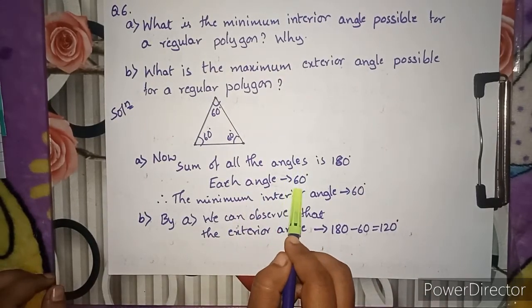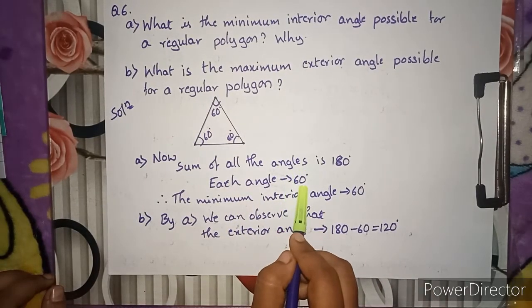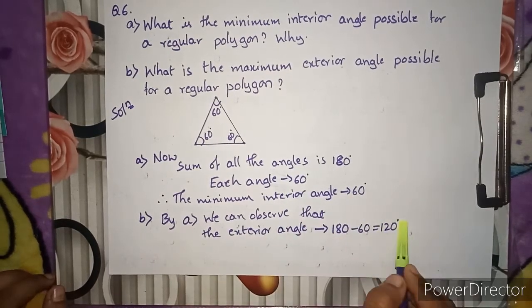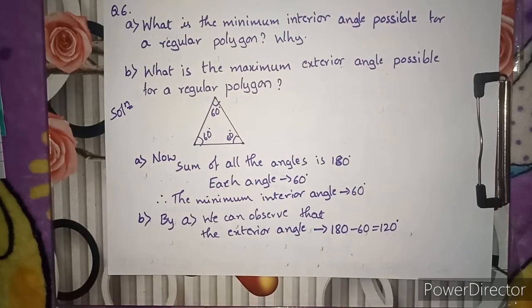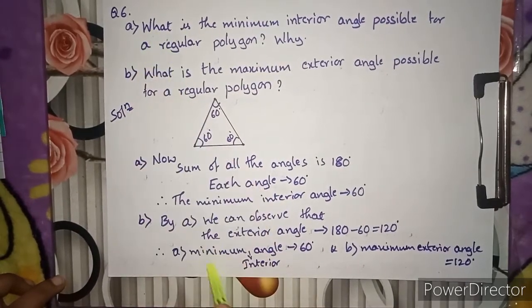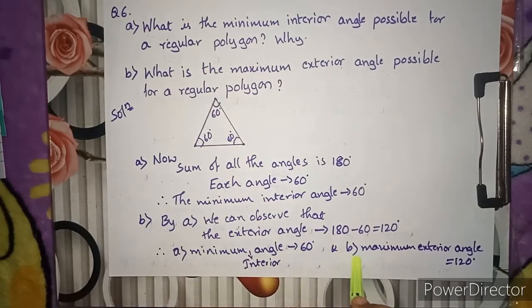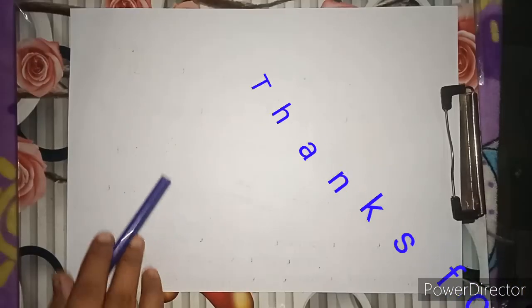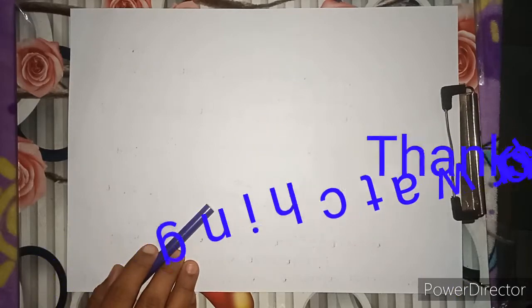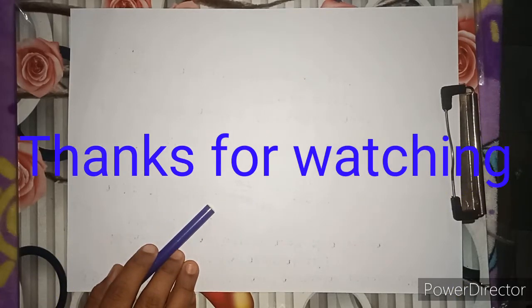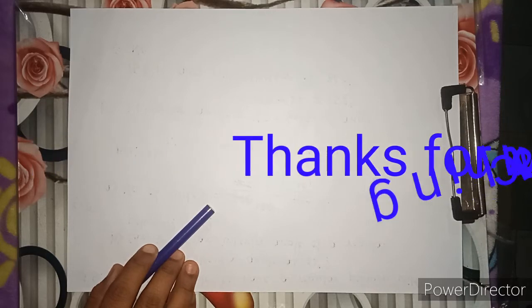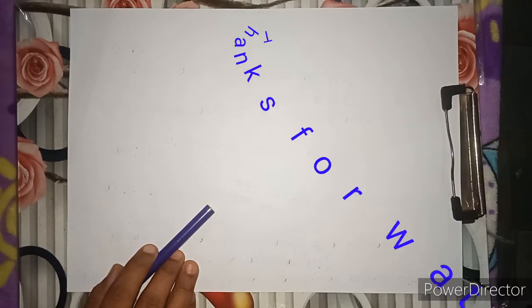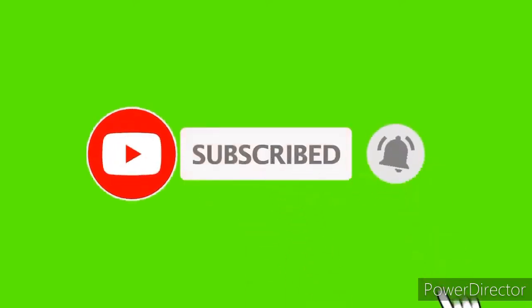Therefore, the minimum interior angle we can draw in a regular polygon is 60 degrees, and the maximum exterior angle is 120 degrees. That's it for this video. See you in the next video. Please subscribe to my channel and press the bell icon to get notifications of all my classes. Thank you, bye.